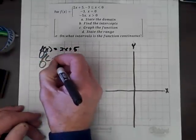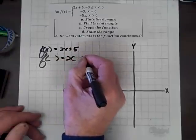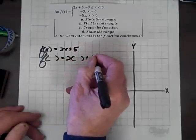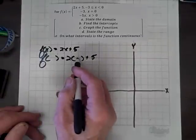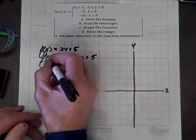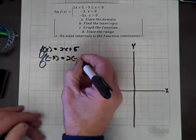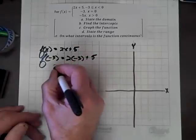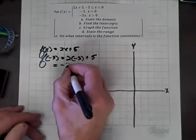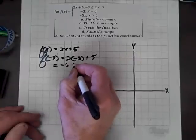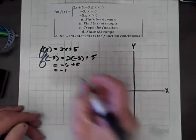f(whatever) equals 2 times whatever plus 5, so whatever we put in here, we have to put in there. If we put a negative 3 in for x, we get negative 6 plus 5, which equals negative 1.